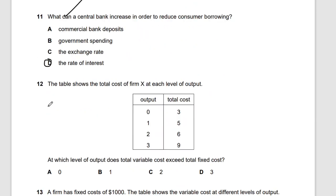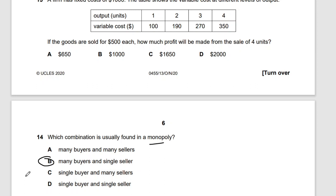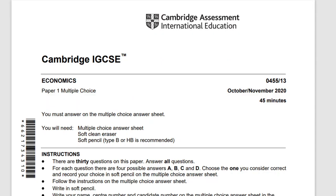Question 14: which combination is found in a monopoly? A monopoly is when a market is dominated by one seller. The answer is many buyers and a single seller — many people want the product but there's only one market dominating. That's the correct combination for a monopoly.